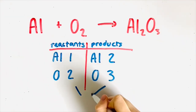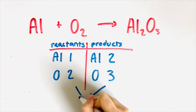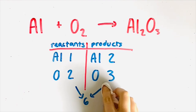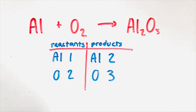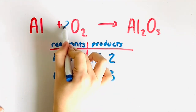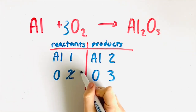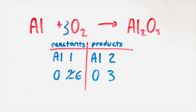First, look at the amount of oxygen atoms on both sides. The smallest common multiple of two and three is six, so you would need six oxygen atoms on both sides. Based on that knowledge, you would add a coefficient of three in front of the oxygen atom on the reactant side, making it six oxygen atoms. This is because three — the coefficient — is multiplied by two, the subscript. In your table, you would cross out two and write six because there are now six oxygen atoms.